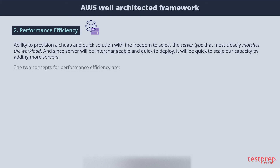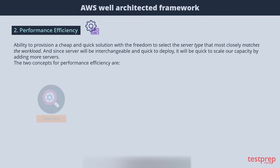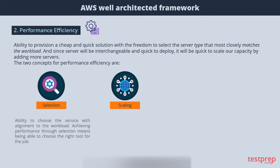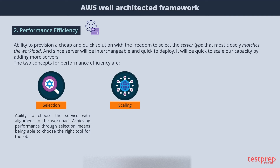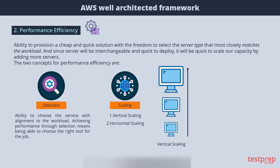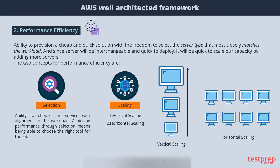The two concepts for Performance Efficiency are selection and scaling. Selection means the ability to choose the service with alignment to your workload — AWS has over 175 services in two dozen categories. Achieving performance through selection means choosing the right tool for the job. AWS has two primary means of scaling: vertical scaling, which involves upgrading your underlying compute to a bigger instance type, and horizontal scaling, which involves increasing the number of underlying instances.